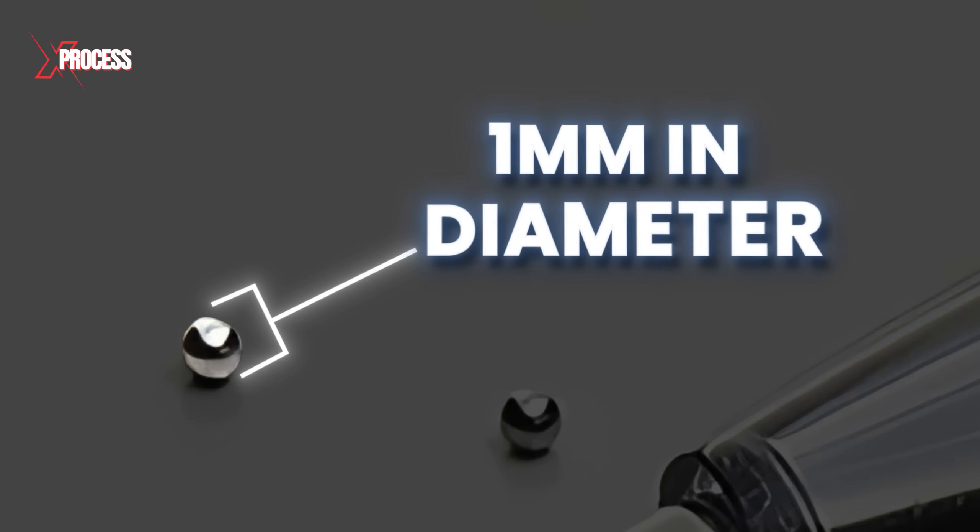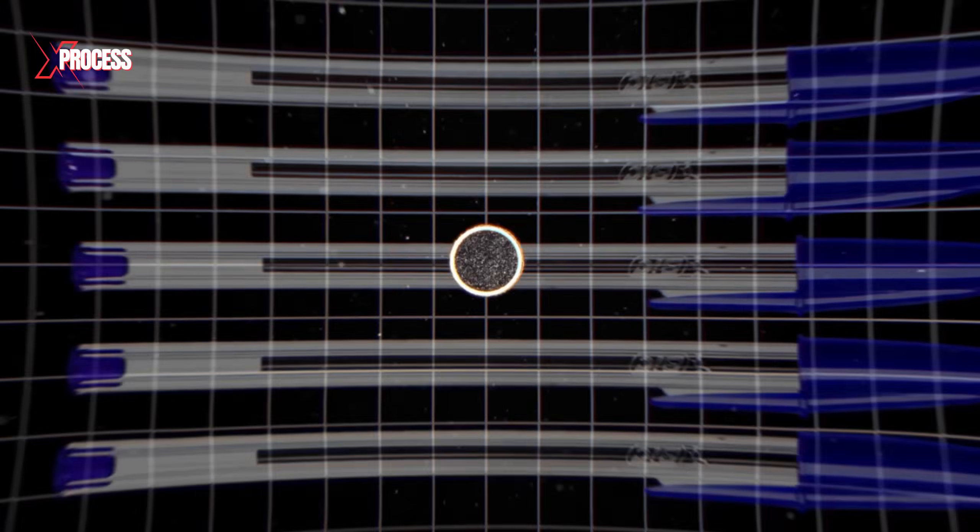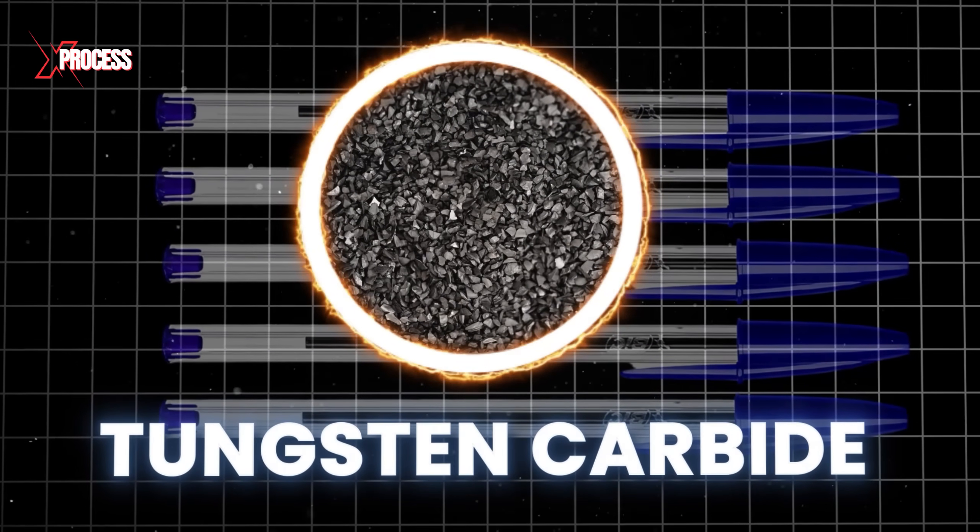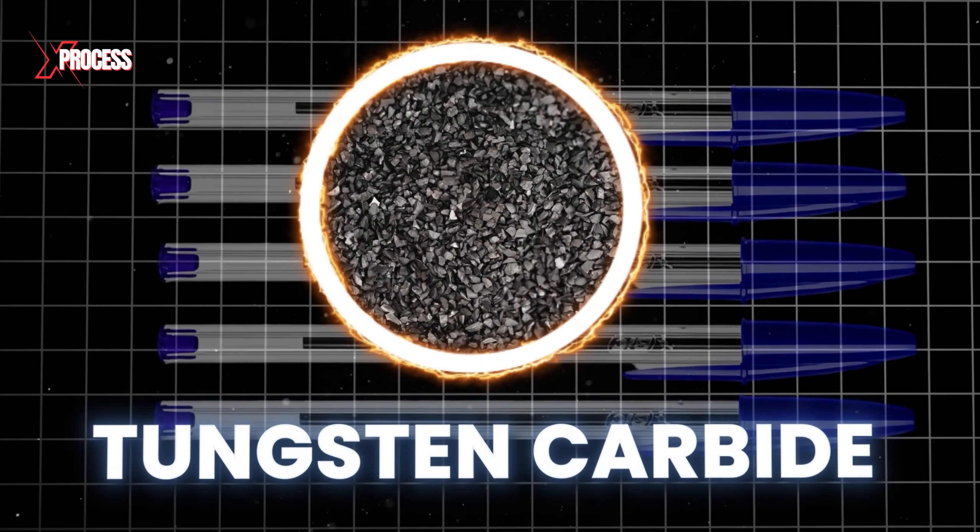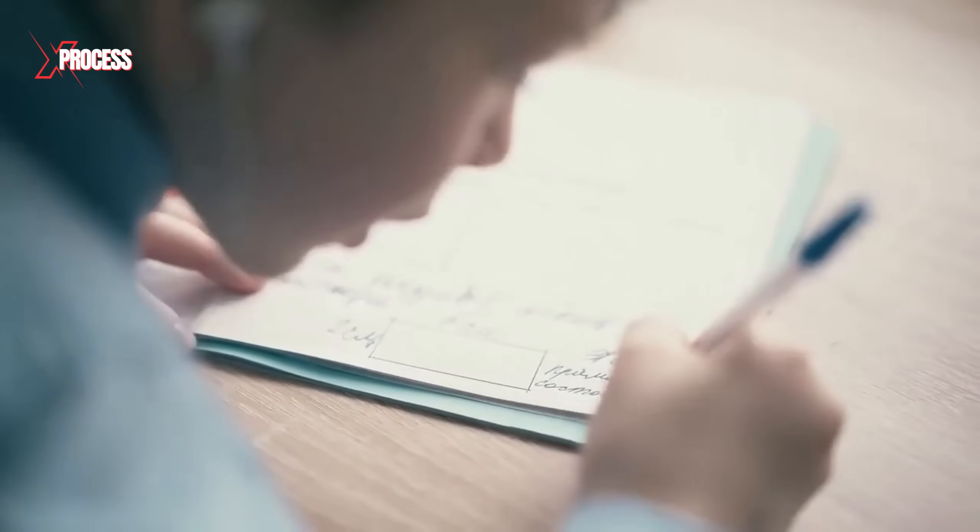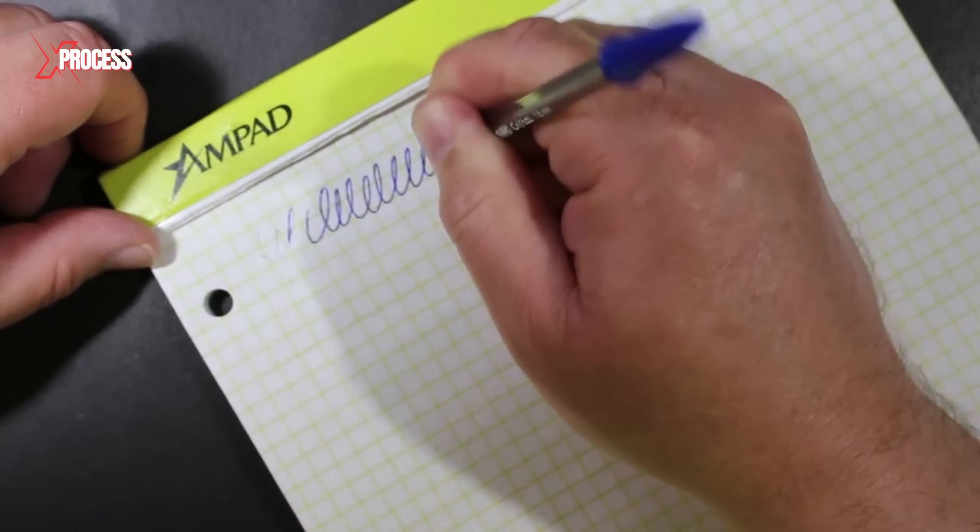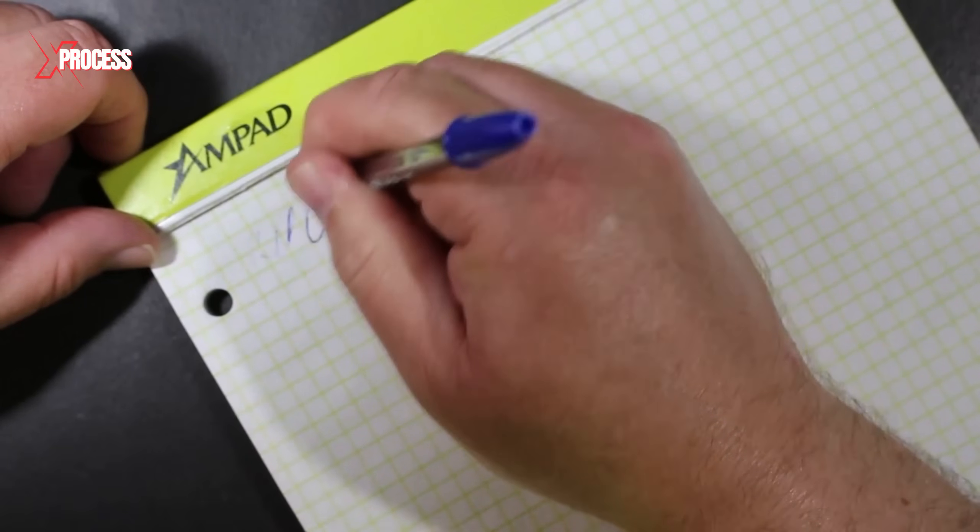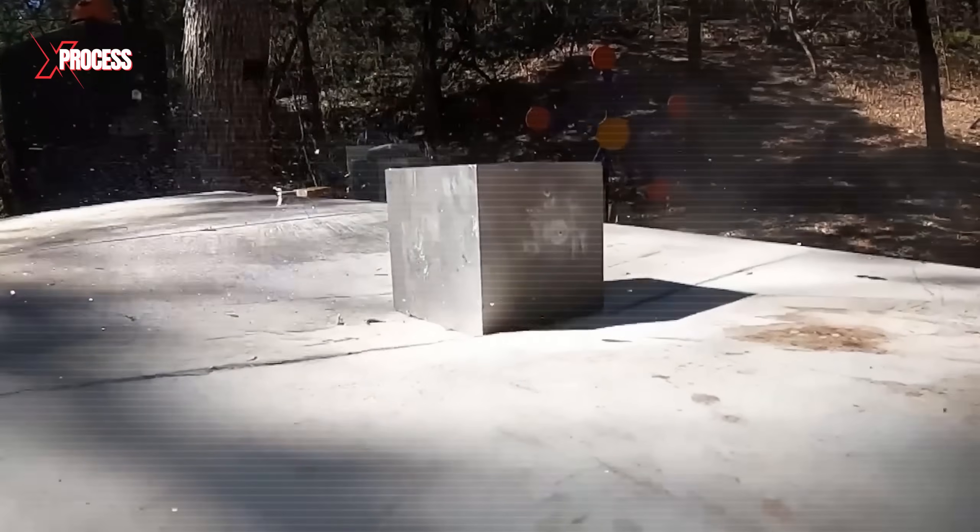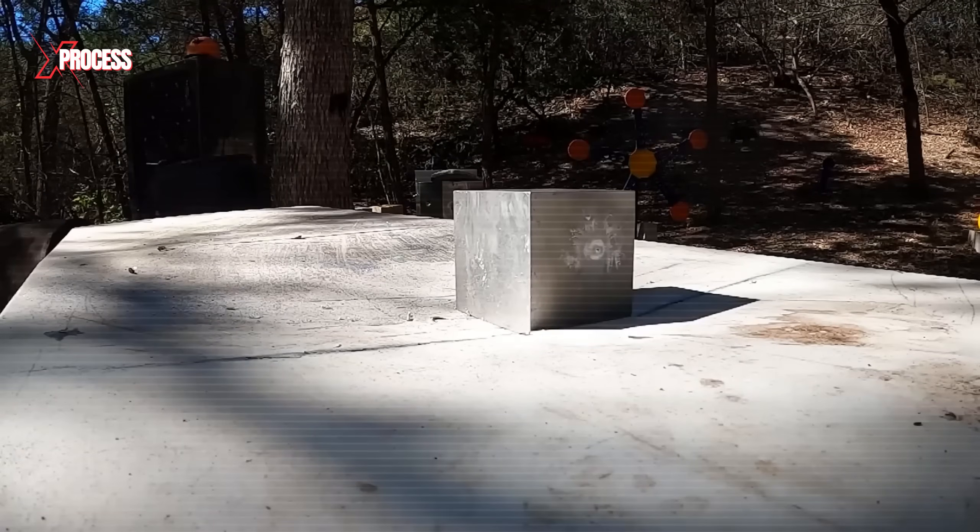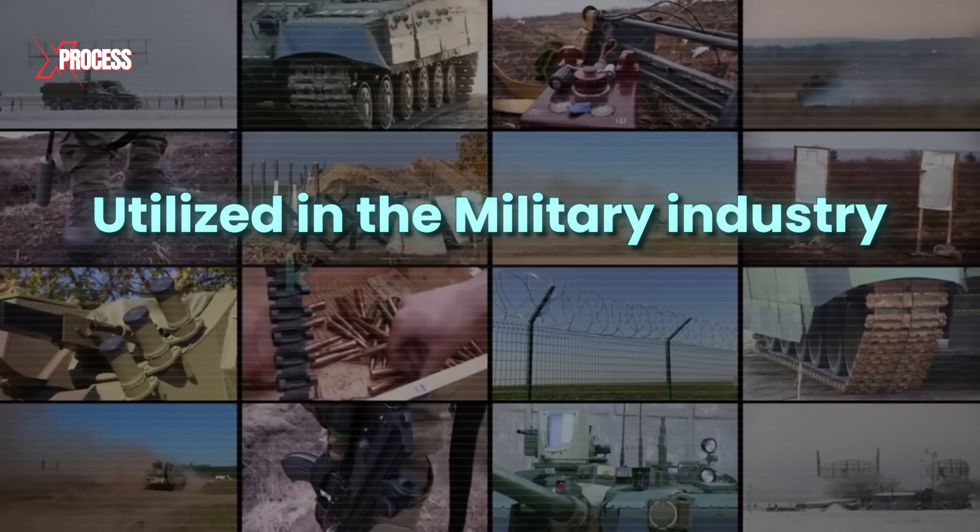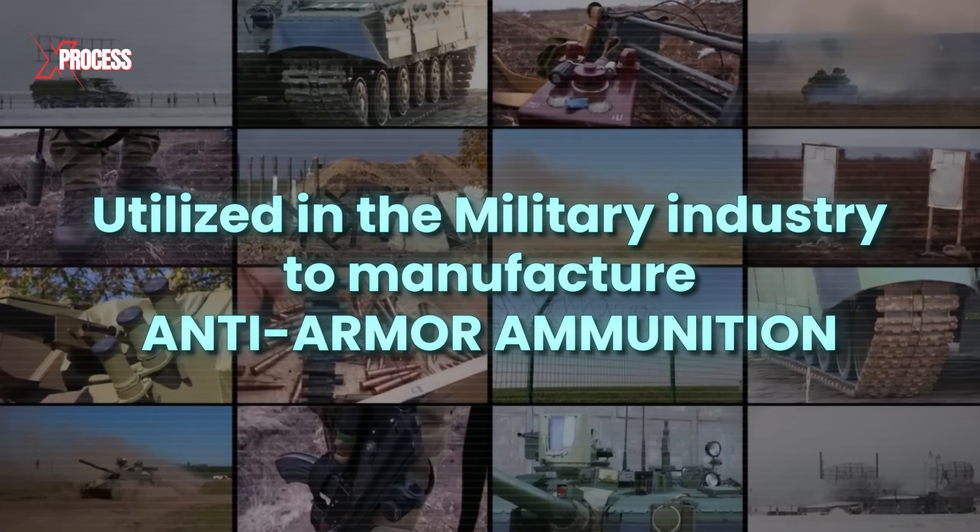These balls, measuring just 1 mm in diameter, are crafted from tungsten carbide, an exceptionally durable material known to be 10 times stronger than steel. In theory, these pens could last a lifetime due to the durability of their materials. However, once the ink runs dry, they are typically discarded. The tungsten carbide used in their manufacturing is so exceptionally hard and resistant that it's also utilized in the military industry to manufacture anti-armor ammunition.